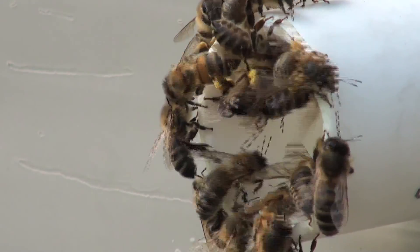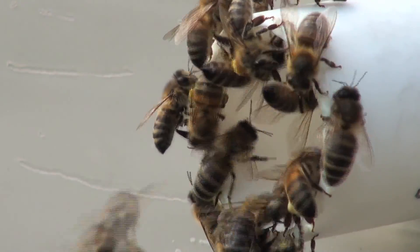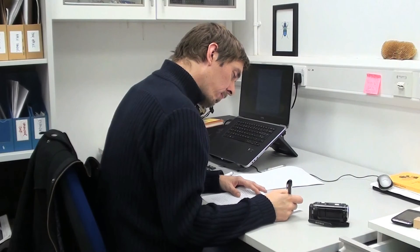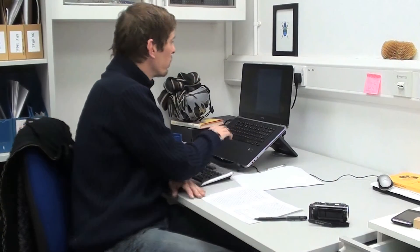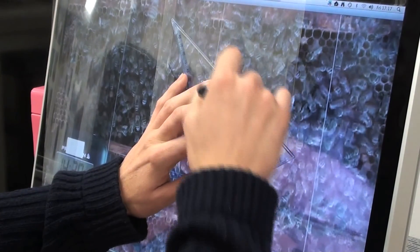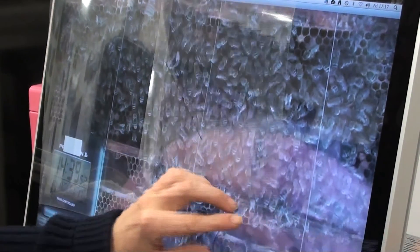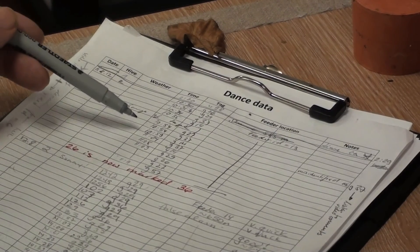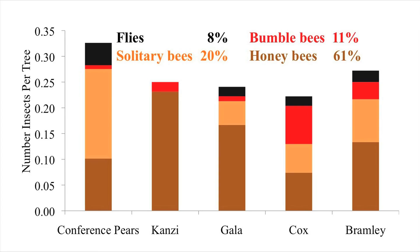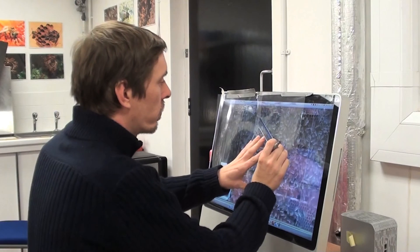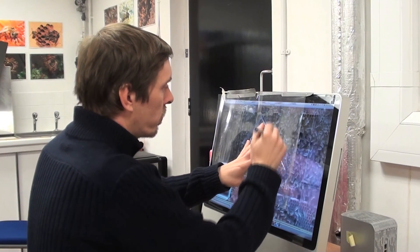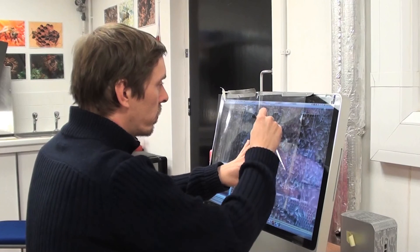It will take us a year or more to analyze our data fully and to write it all up. In particular, decoding the waggle dances is very time consuming. One thing that was easy to determine was the insects visiting apple flowers: honeybees were in the majority at nearly two-thirds, other bee species nearly one-third, and the rest were flies at less than a tenth. We are looking forward to finding out what else our data have to tell us about apple pollination.